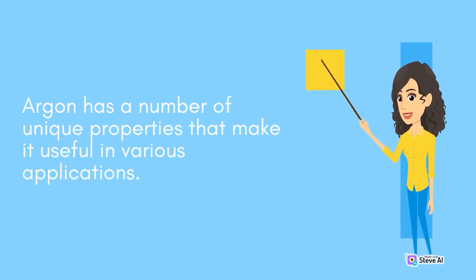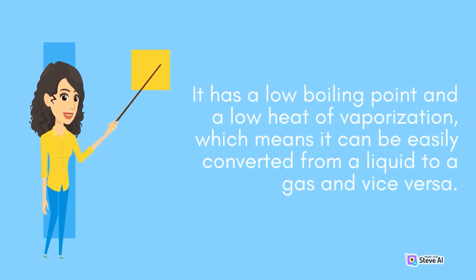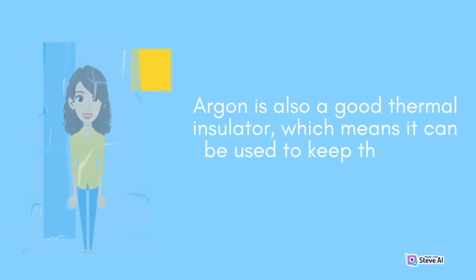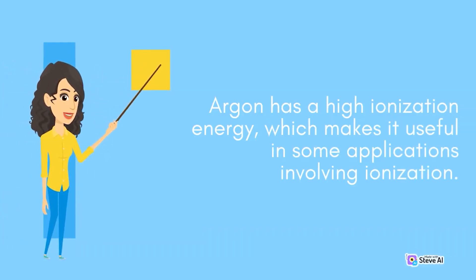Argon has a number of unique properties that make it useful in various applications. It has a low boiling point and a low heat of vaporization, which means it can be easily converted from a liquid to a gas and vice versa. Argon is also a good thermal insulator, which means it can be used to keep things cool or warm. Argon has a high ionization energy, which makes it useful in some applications involving ionization.